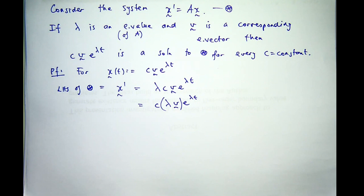I can replace lambda v with A times v. Because lambda is an eigenvalue and v is the corresponding eigenvector.